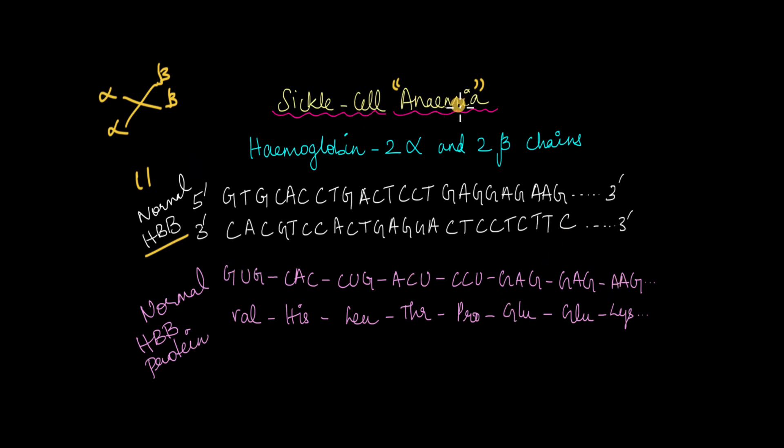But what happens in sickle cell anemia is that there is a small point mutation. In this position, if you take a look, A and T swap places with one another. We saw this happen in the previous video and we learned that there could be drastic consequences. This is one such example where just a simple swapping of the nucleotides between the 5 prime strand and the 3 prime strand can lead to drastic consequences.